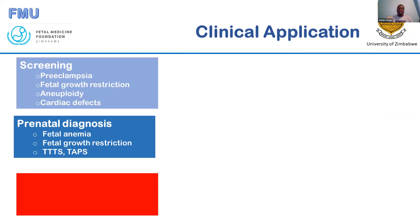In the first trimester, there is screening for preeclampsia. It is also done during the anomaly scan. Uterine artery Dopplers are done and placed on the nomogram. If they are high, interventions can be initiated, including aspirin in the first trimester or calcium in the second trimester. There is also screening for fetal growth restriction using Dopplers, as well as aneuploidy and cardiac defects such as ductal stenosis.